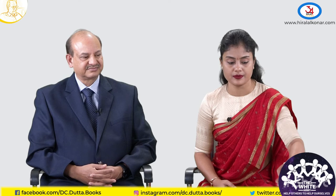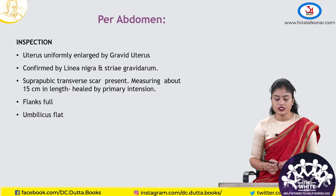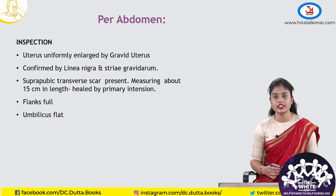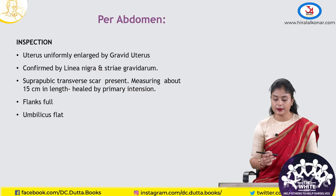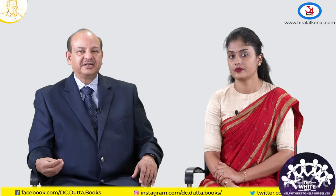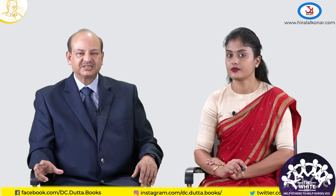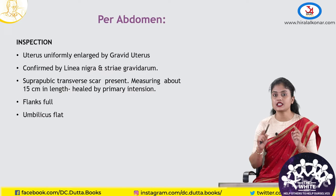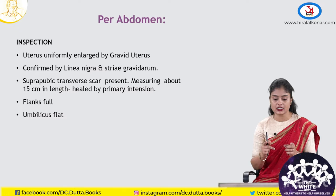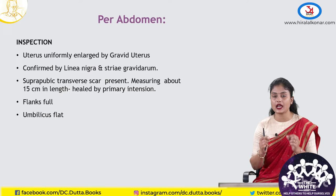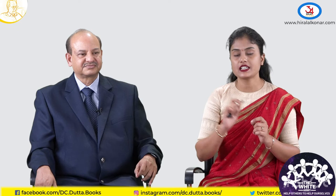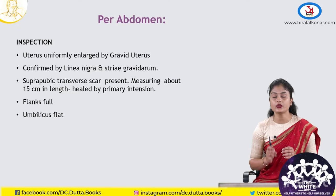Coming to the obstetric or per abdomen examination. On inspection, the uterus was uniformly enlarged — gravid uterus confirmed by linea nigra and striae gravidarum. There was a suprapubic transverse scar present measuring about 15 centimeters in length, healed by primary intention. Her flanks were full and umbilicus was flat. In a case of post-caesarean pregnancy, the scar needs to be described in detail — its location, length, and healing: primary intention means clean healing; secondary intention means ragged edges. You can also look for scar herniation or incisional hernia.